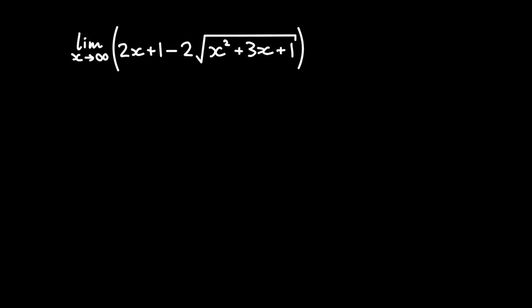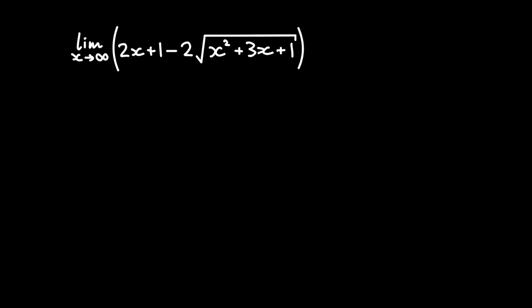I'm going to split this expression into two parts, and then multiply by a constant — by 1. Because if you multiply anything by 1, it stays the same. So we have the limit as x approaches infinity.